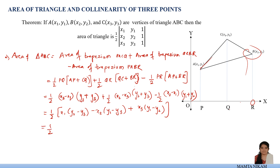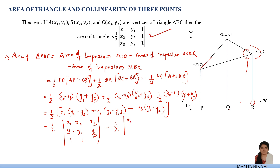You can express this as a determinant form. The expression can be written as half times the determinant with rows (X1, Y1, 1), (X2, Y2, 1), (X3, Y3, 1) — by shifting or interchanging rows to columns. So that is the way we get the formula to find the area of a triangle using the determinant.